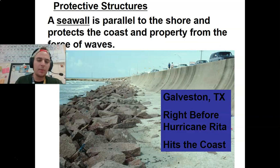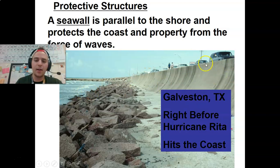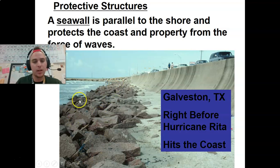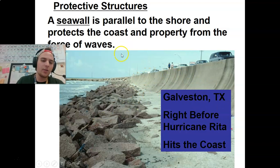Seawalls — a lot of people have seen these before. These are built parallel to the shore and protect the coast and property from the force of waves. Especially in coastal cities, you're going to see these a lot of times right next to highways. They also often have rocks that break the energy of the waves as they come in toward the shore, so that by the time they get to the seawall, they're not blasting up on top of them. This is Galveston, Texas, right before Hurricane Rita — you've got your seawall and your rock buildup to break down wave energy.